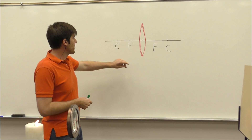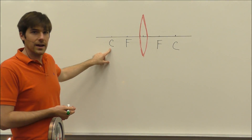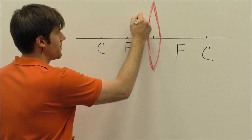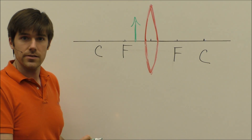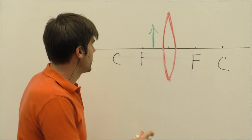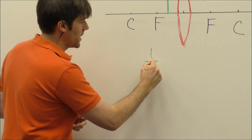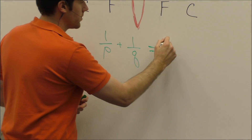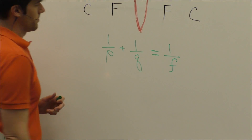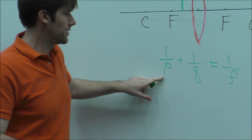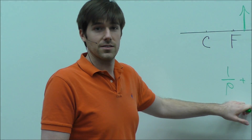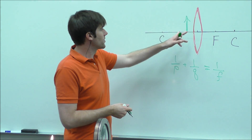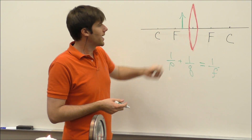I've labeled the thin lens and I've labeled the focal points and the radii of curvature. The first scenario we'll consider is when an object is located between the focal point and the thin lens. Mathematically, we can figure this out by the thin lens equation, which is 1 over P plus 1 over Q equals 1 over the focal length. P is the object's distance from the thin lens, Q is the image distance away from the lens, and the focal length is denoted by the script F.